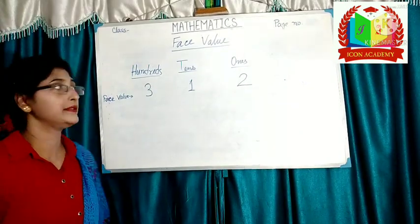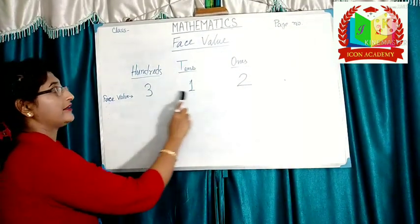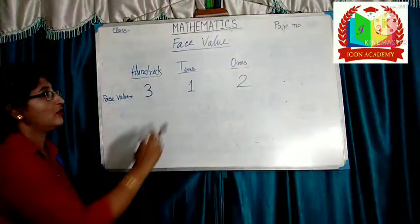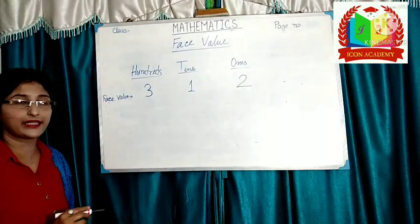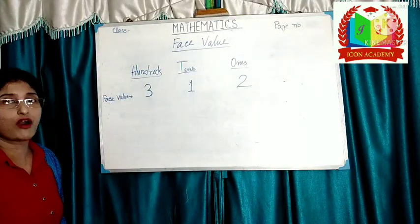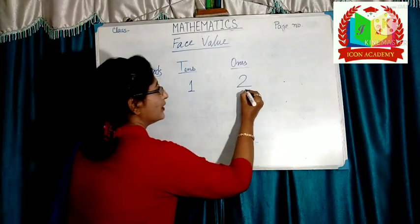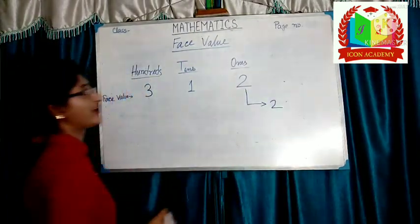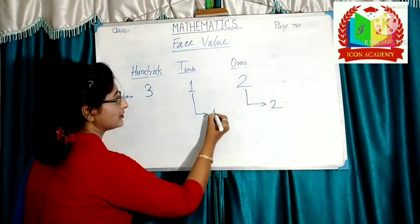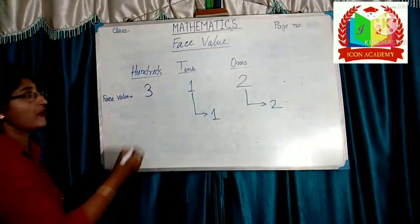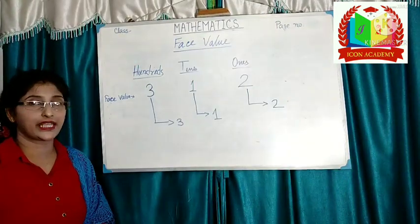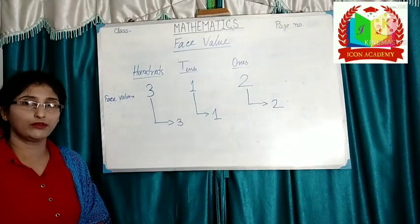Another example: here the number is 312. 2 is in 1's place, 1 is in 10's place, and 3 is in 100's place. So, phase value of 2 is 2. Phase value of 1 is 1. Phase value of 3 is 3. Phase value never changes, but place value is changeable.